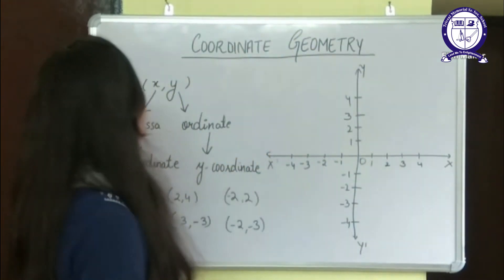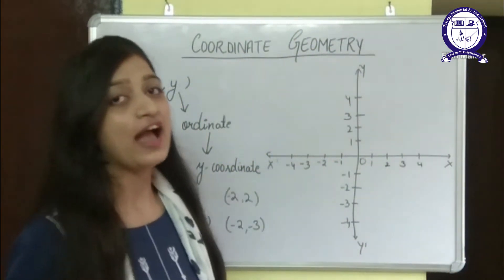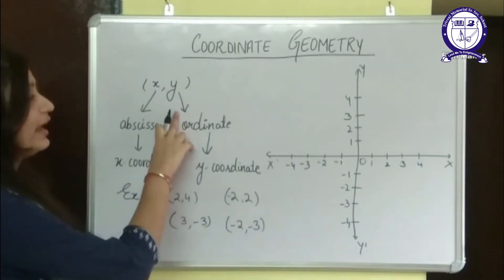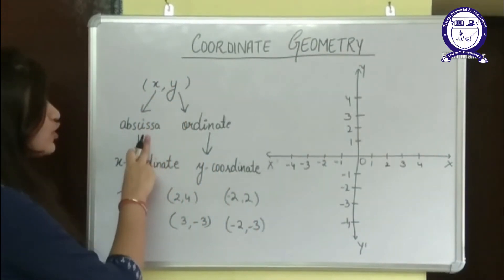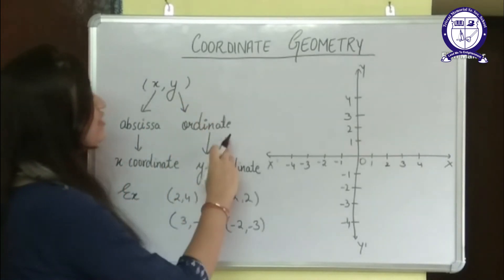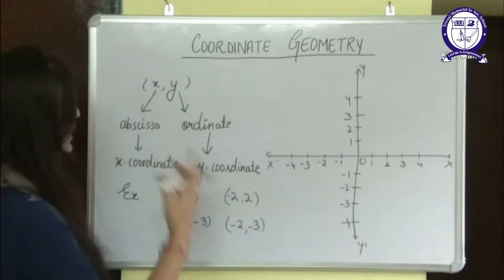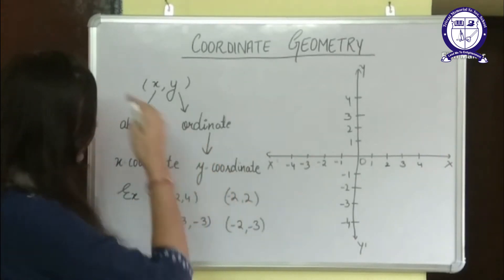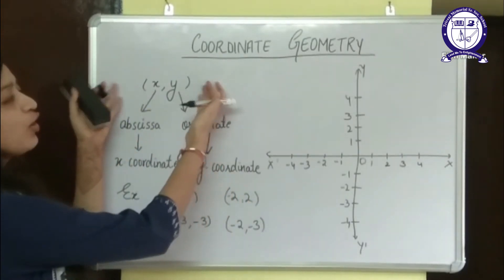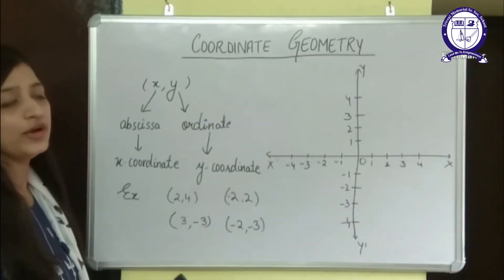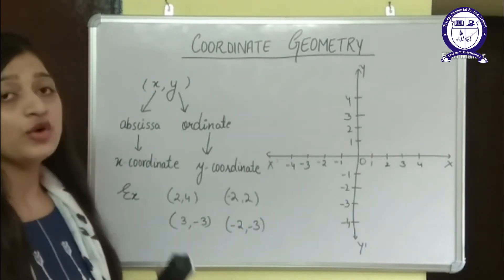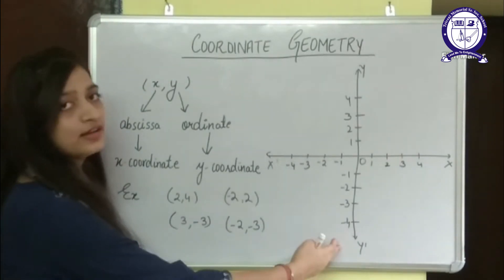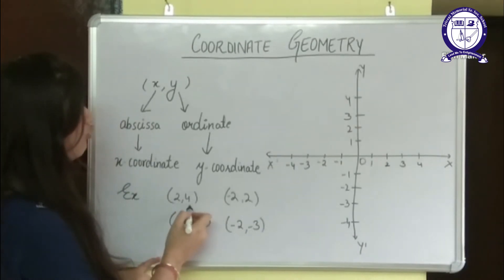In coordinate geometry, we have the coordinates in the form of x and y, where the x coordinate is called abscissa and y is called an ordinate. They can also be called as x coordinate and y coordinate and they together form a coordinate point. So now we are going to plot some points on this coordinate graph, like (2, 4).